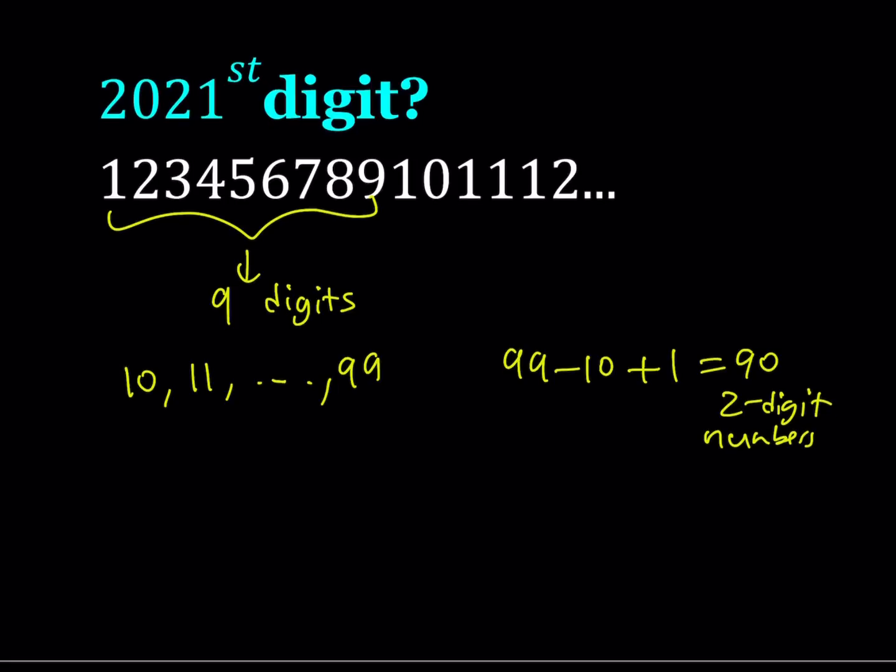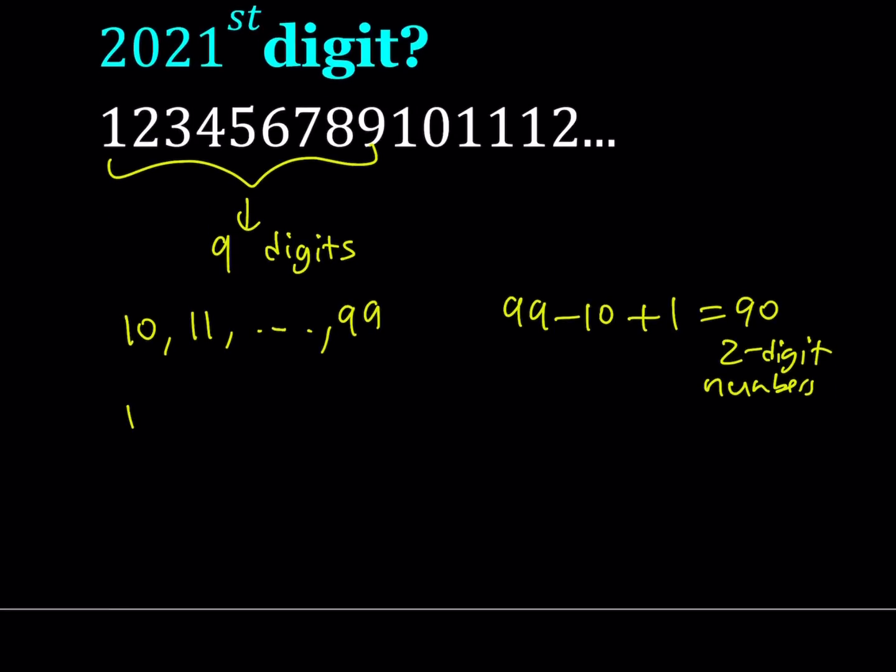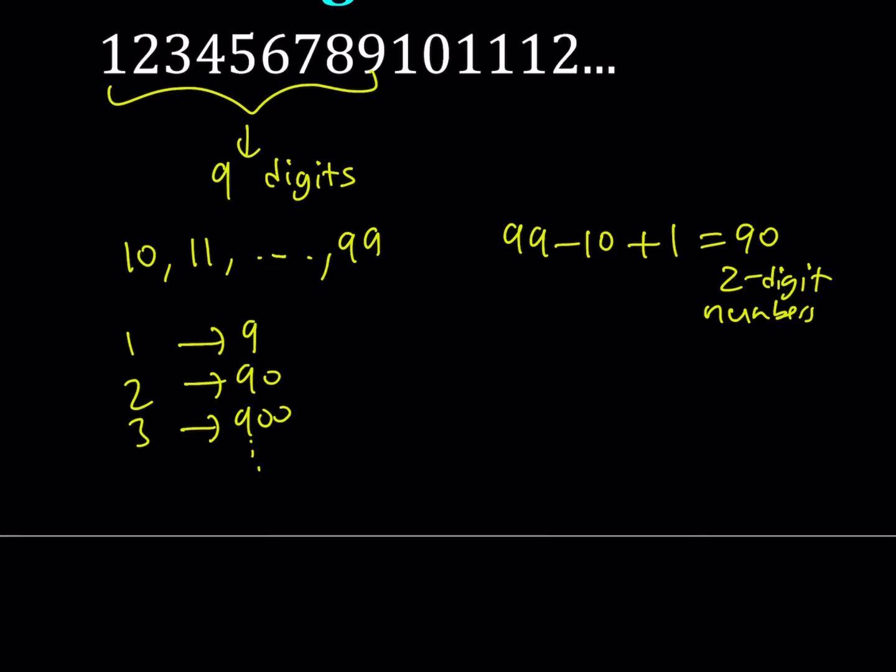So the numbers go like this. For one digit, you have nine numbers. For two digits, you have 90. For three, it's 900, so on and so forth. So what's the general formula? Well, here's how it goes. If you think about it, this is like 9 times 10 to the second power. This is 9 times 10 to the first power and this is 9 times 10 to the power of 0.